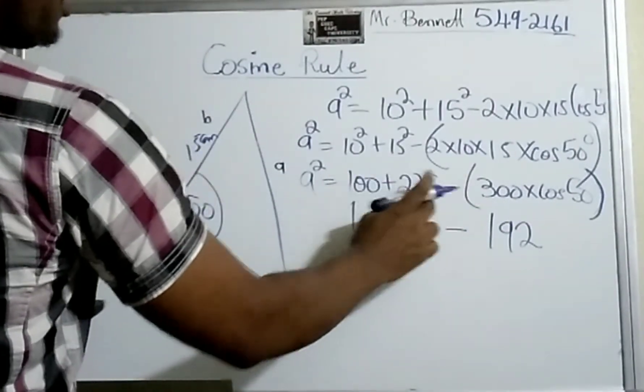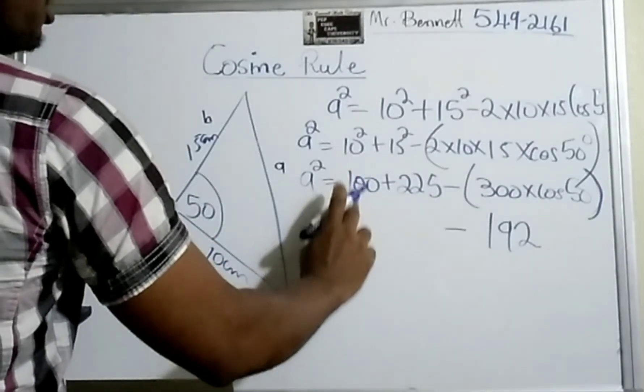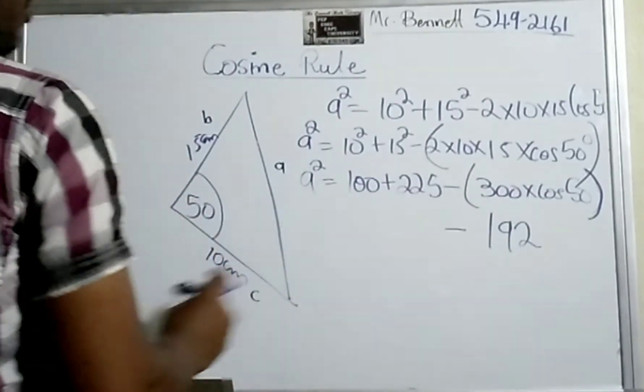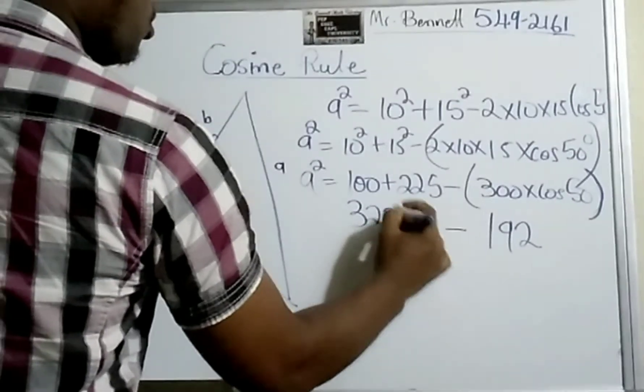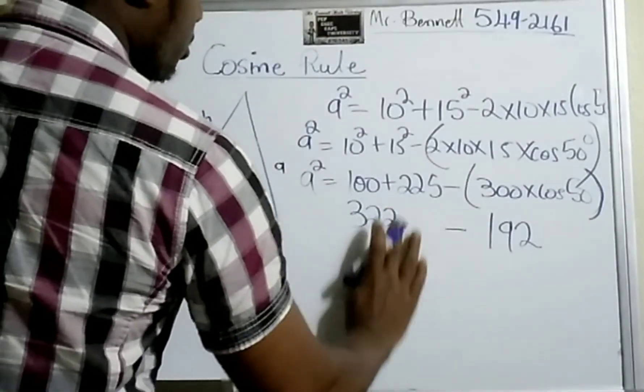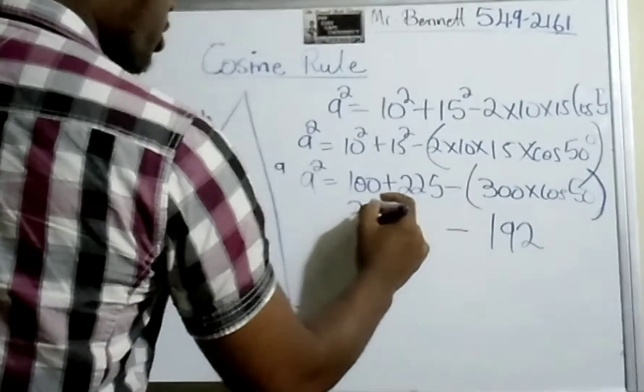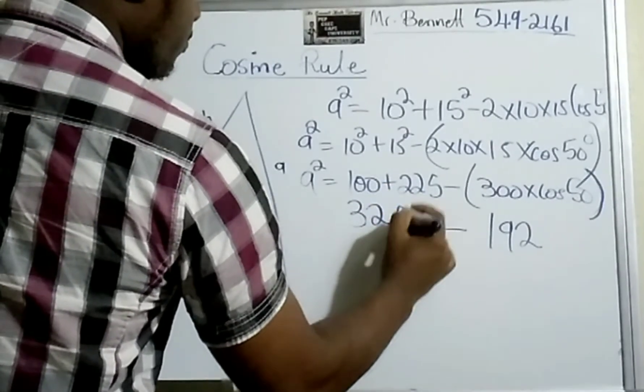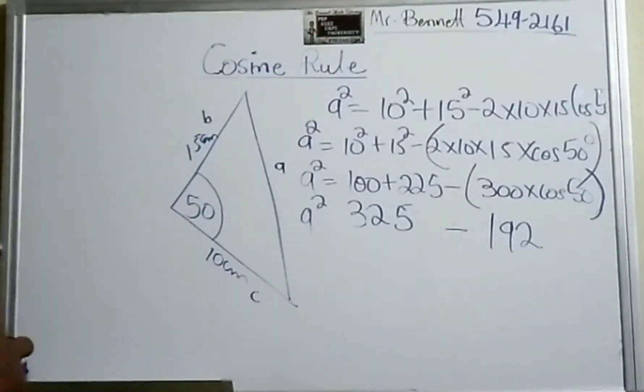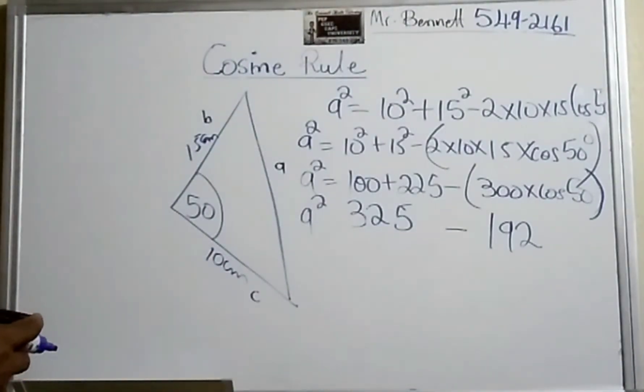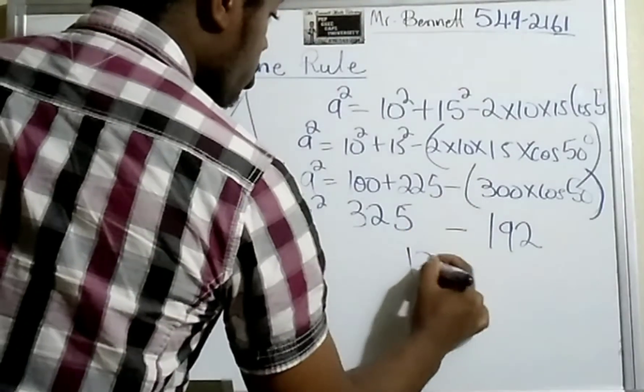Now we are going to add 100 plus 225. So we get 325 minus 192, and that would give us 132.